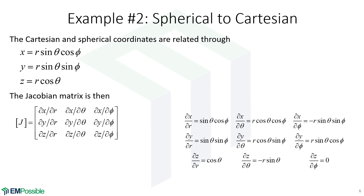Next line — the partial derivatives of Y with respect to R, then theta, then phi. The partial derivative of Y with respect to R is simply sine theta sine phi. With respect to theta, the derivative of sine theta is cosine theta, so we have R cosine theta sine phi. With respect to phi, the derivative of sine phi is cosine phi, giving R sine theta cosine phi.